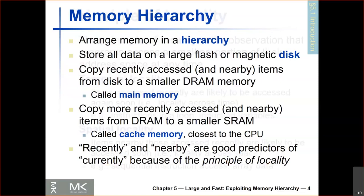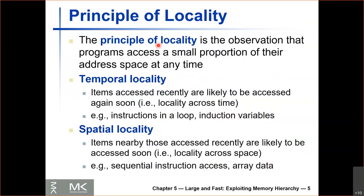The principle of locality states that programs tend to access a small portion of their data at any point in time, and this access observes temporal and spatial locality. Temporal locality is the observation that if a program accesses some data, it's probably going to access that same data in the future. Spatial locality says if a program accessed some data, it's likely going to access nearby data in the future. So when we access data, we keep it in the cache to benefit from temporal locality, and we also bring nearby data into the cache to benefit from spatial locality.